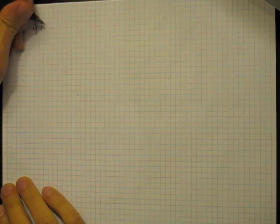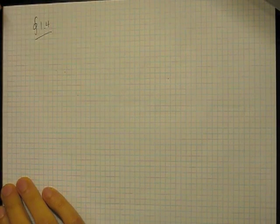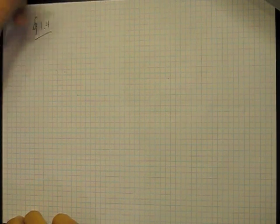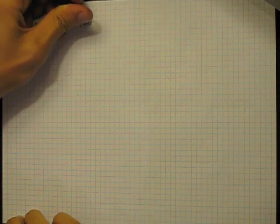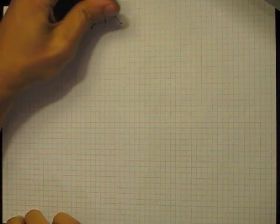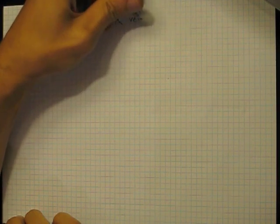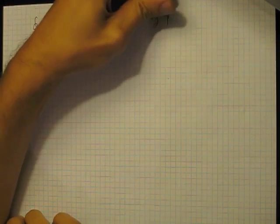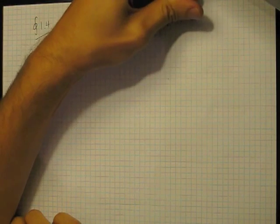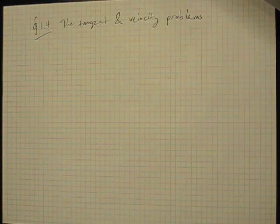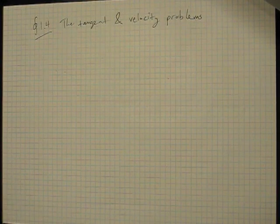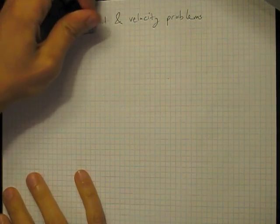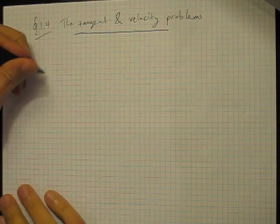Okay, so we're going to start off talking about section 1.4. This section is called the tangent and velocity problems.